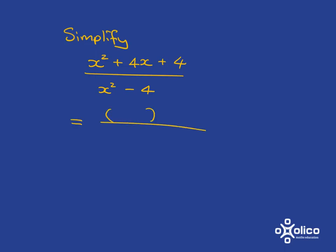So at the top, we're going to have an x and an x, and we need to find two things that multiply together to give us 4 and add up together to give us 4, and that's obviously a +2 and a +2. x² - 4, I recognize immediately as a difference of two squares, so I know what that factorizes into.